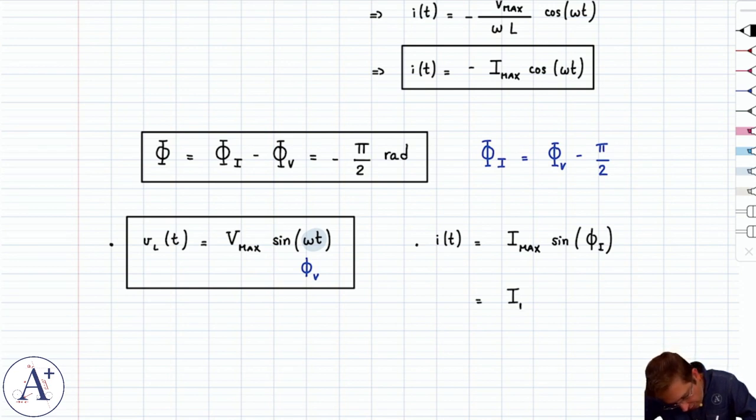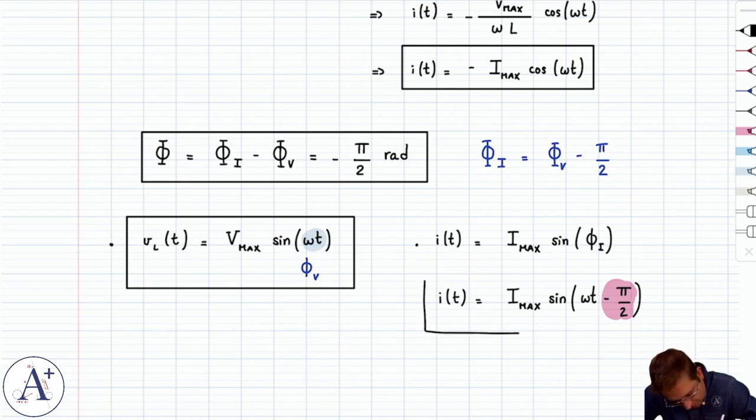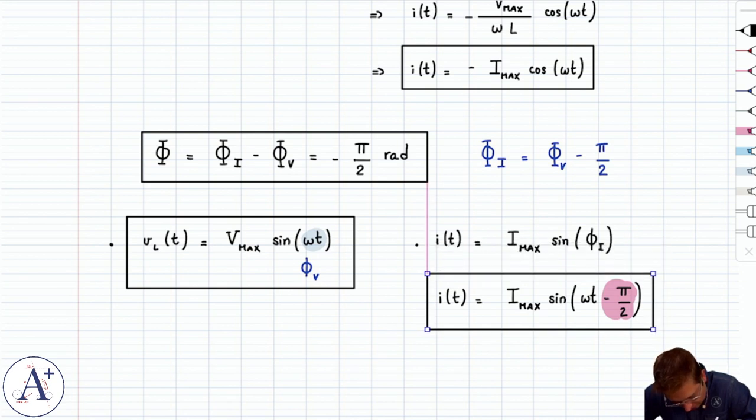And again, the reason for doing this is to compare like with like. Now we can compare the sine here on the left with the sine here on the right and come to the conclusion that the only difference is minus π/2. And the minus π/2 tells you that the voltage leads the current. So this is i(t) equals Imax sin(ωt - π/2).